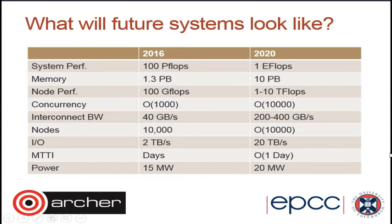So what does that mean for us? At the moment the biggest machine in the world is about 100 petaflops — about 60 times bigger than Archer. We're aiming for computers which are ten times as big as that, running at an exaflop in speed. The way you get there is through very large numbers of nodes but also very large numbers of cores on each node. The biggest machine in the world has 10,000 nodes and each node has about a thousand cores inside it. The second biggest has 3,000 cores per node.